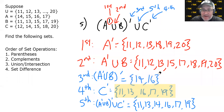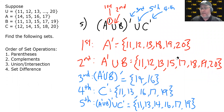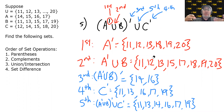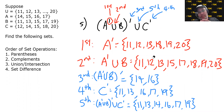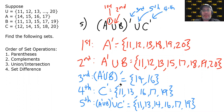That one took a lot longer, but it had five operations, so it required five steps. Each individual step is easy — just ask yourself: what am I going to do, and what am I going to do it to? Do it, then move on to the next step.